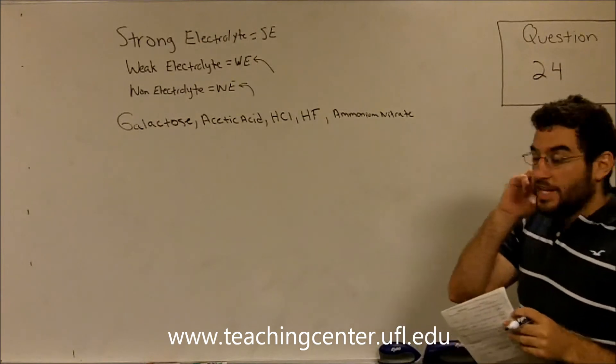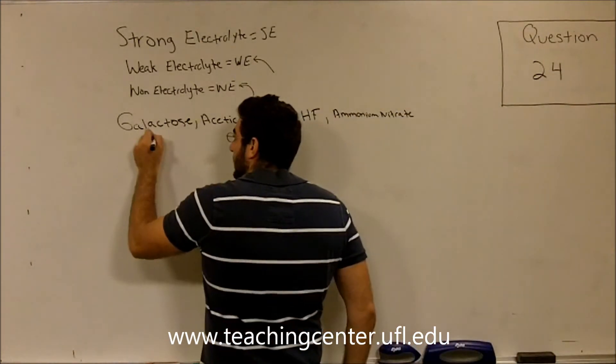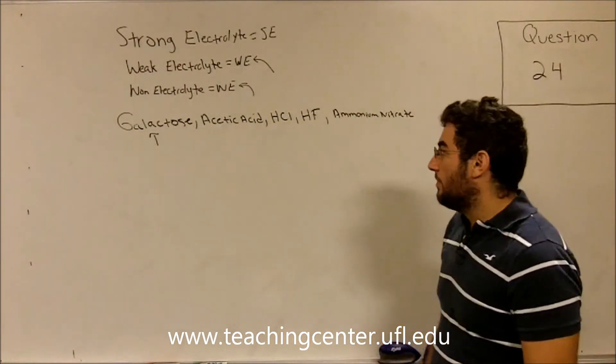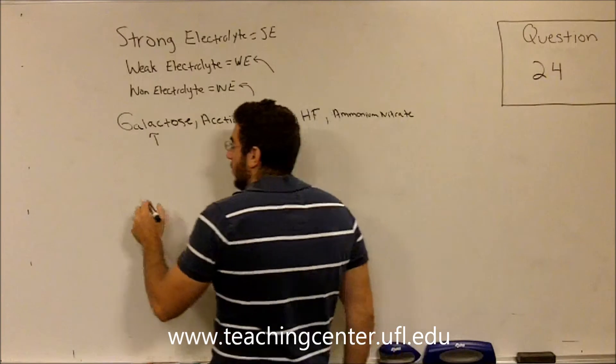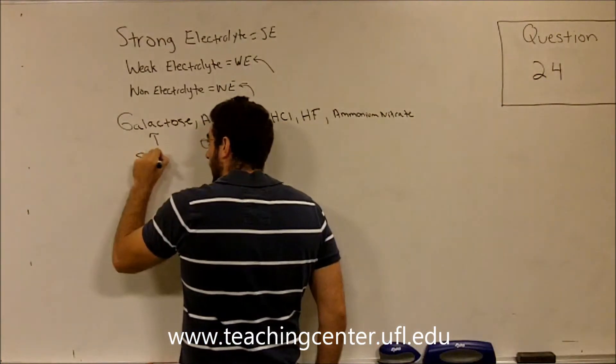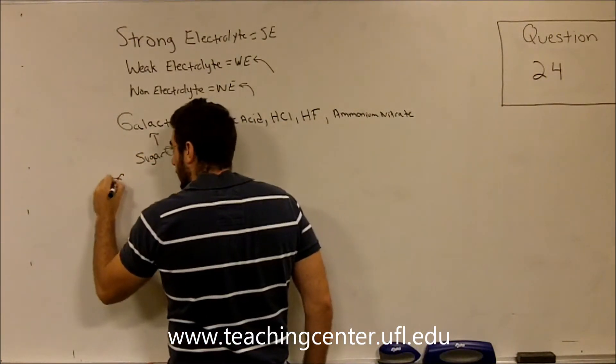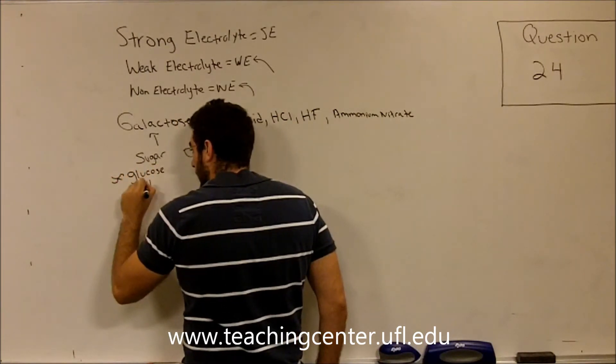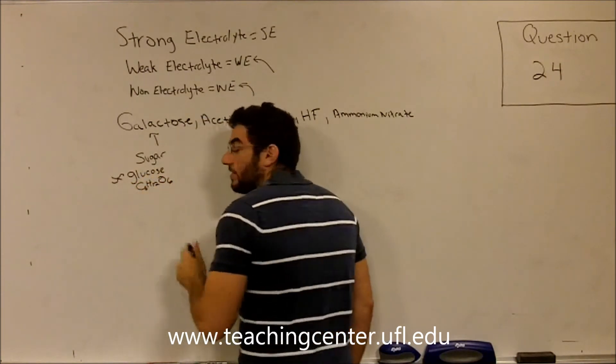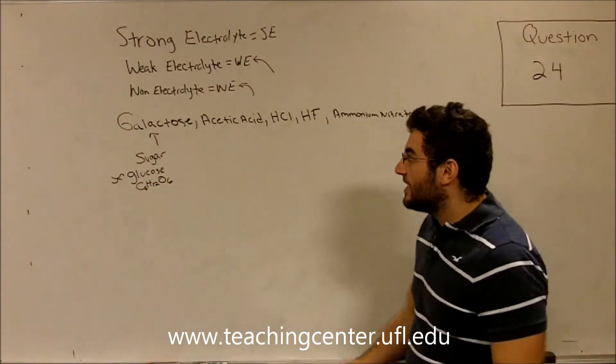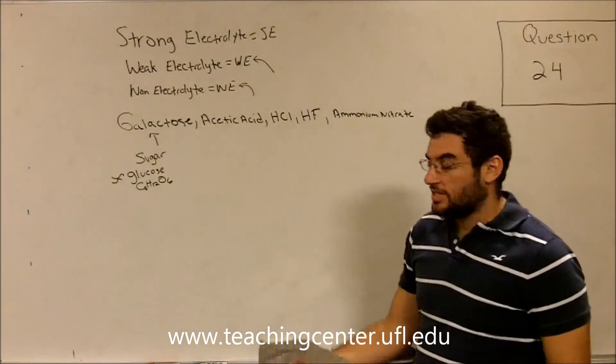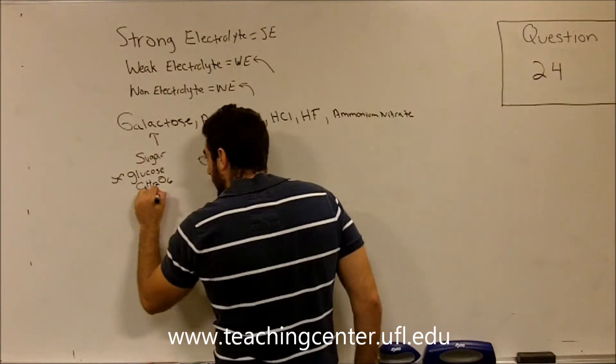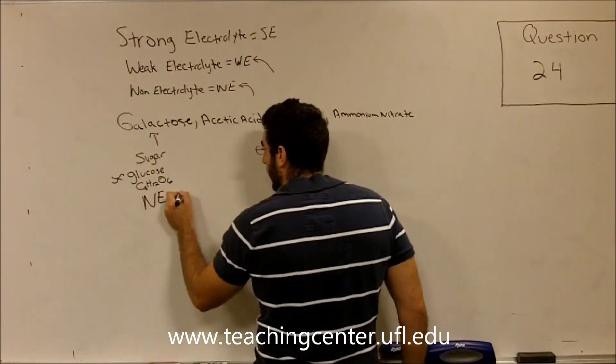So the first one we see here is galactose. I'm not exactly sure what the chemical compound is off the top of my head, but I know that it's a sugar, and it's similar to glucose. And glucose is C6H12O6. This sugar does not break up into ions in water. It's just a sugar. So galactose is going to be classified as a non-electrolyte.